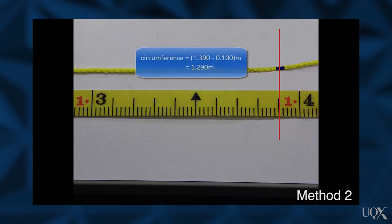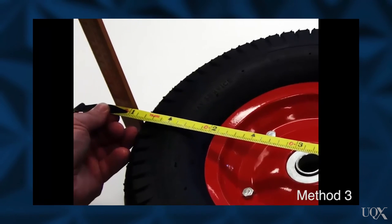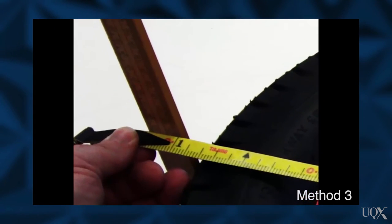As you can see, compared with the last measurement, the circumference is 20 millimetres longer using this method. The wheel circumference can also be estimated by measuring the diameter of the wheel and calculating the circumference. With the camera position fixed,